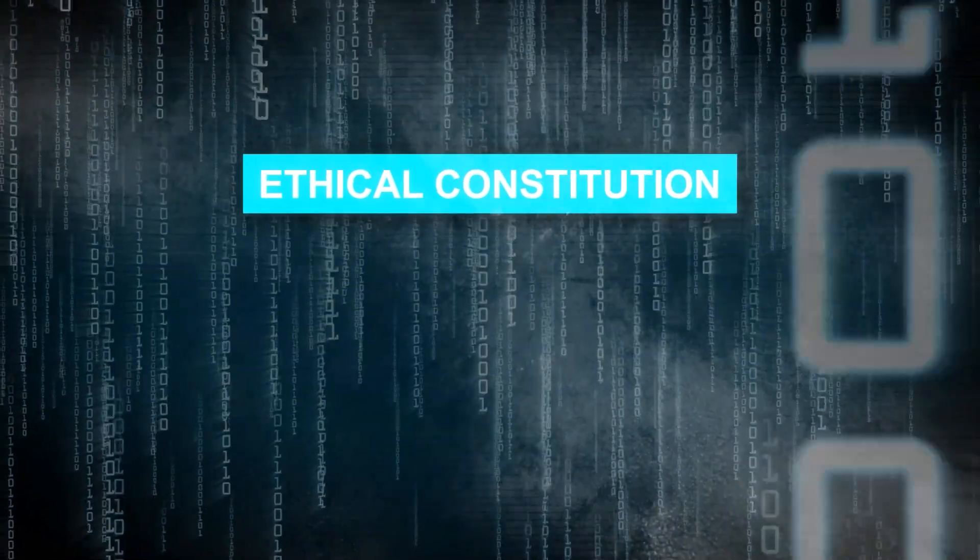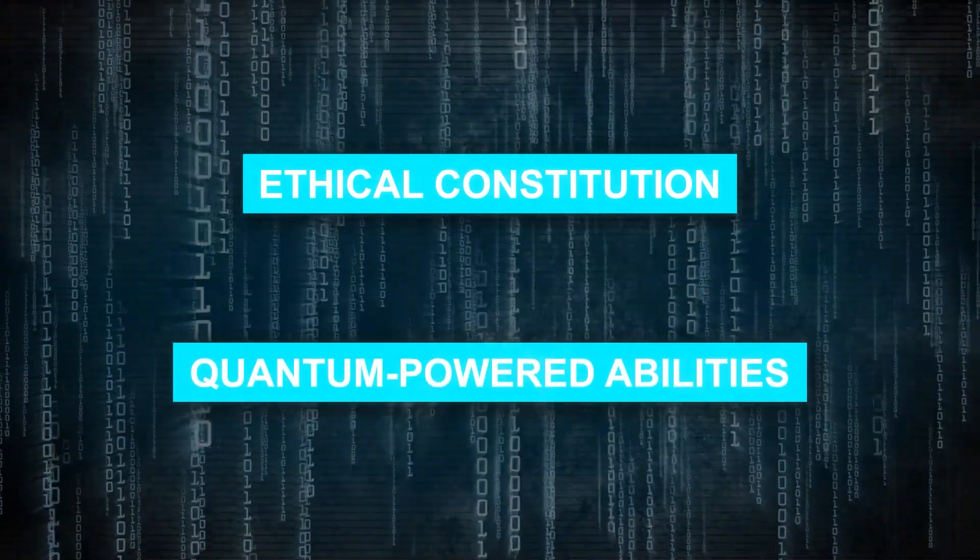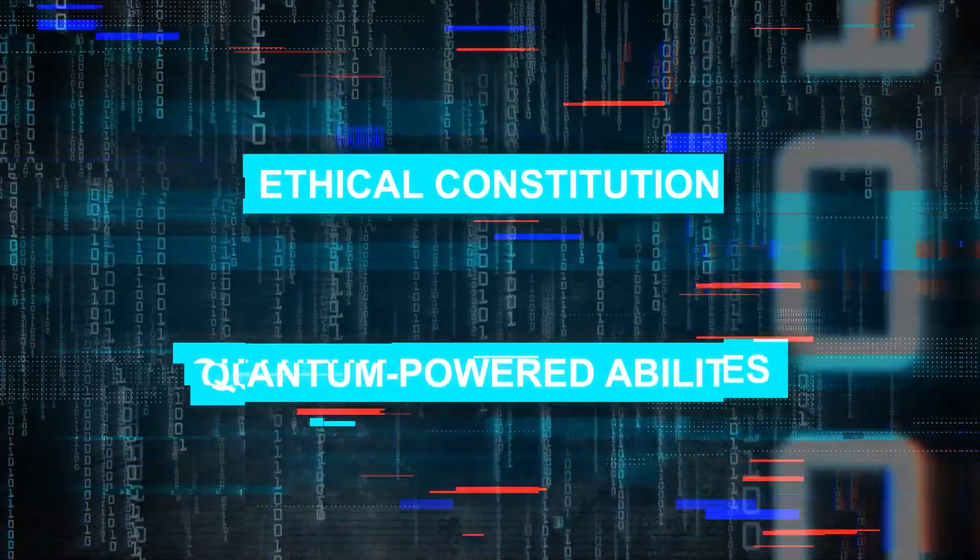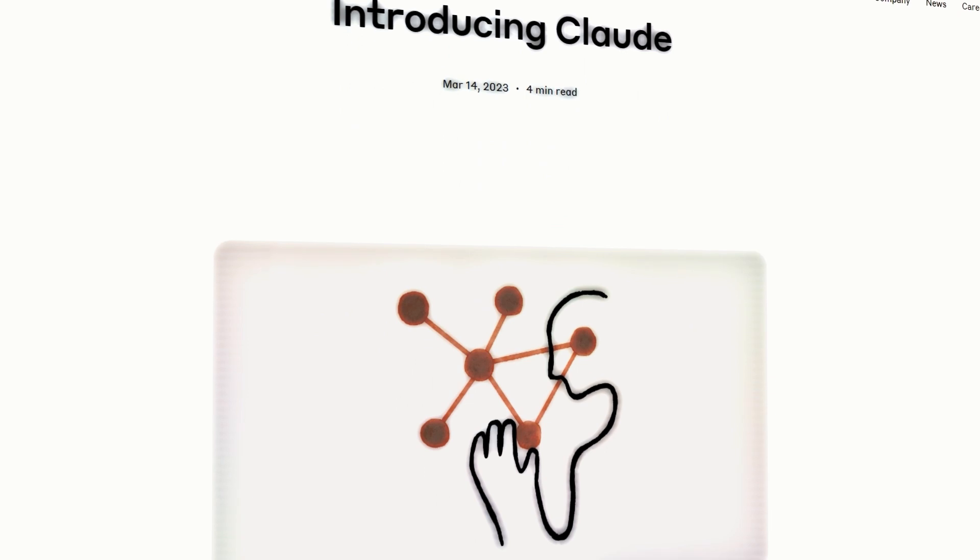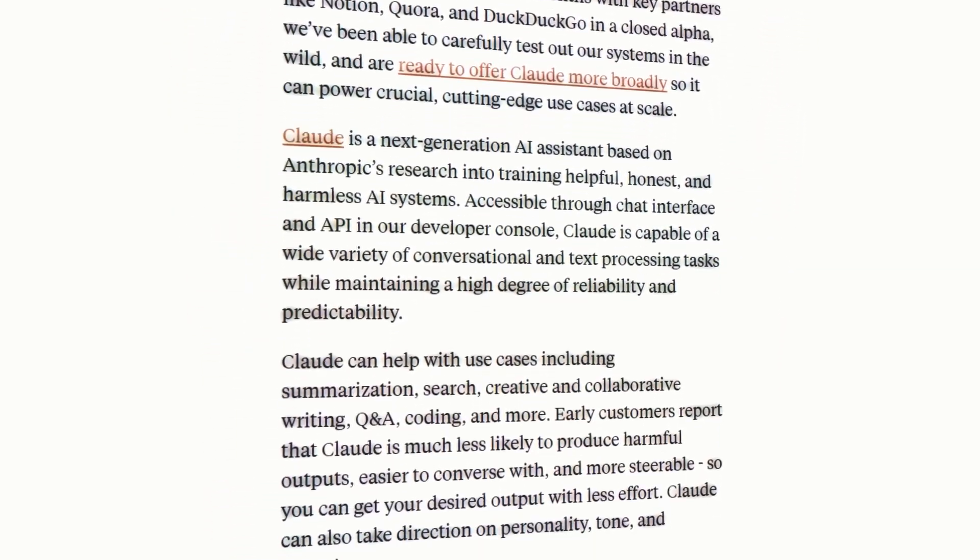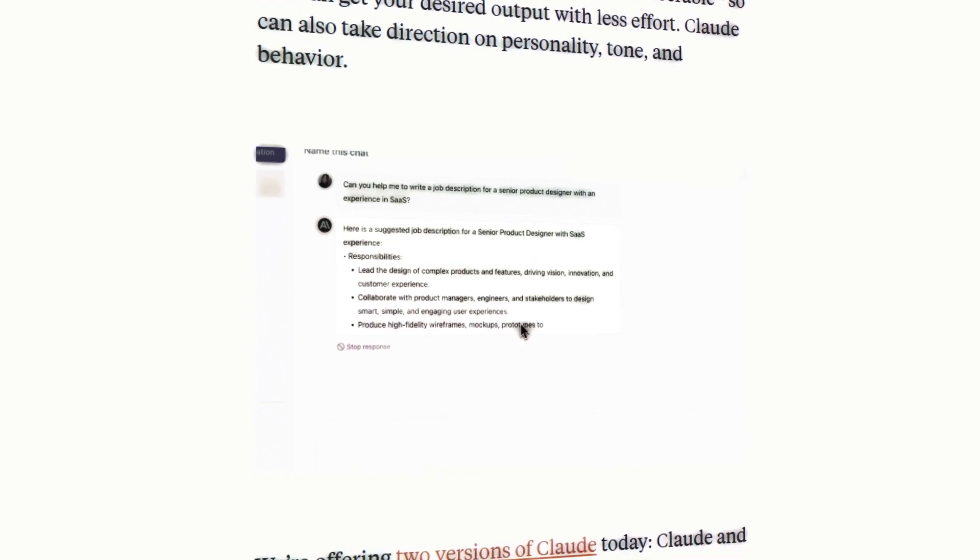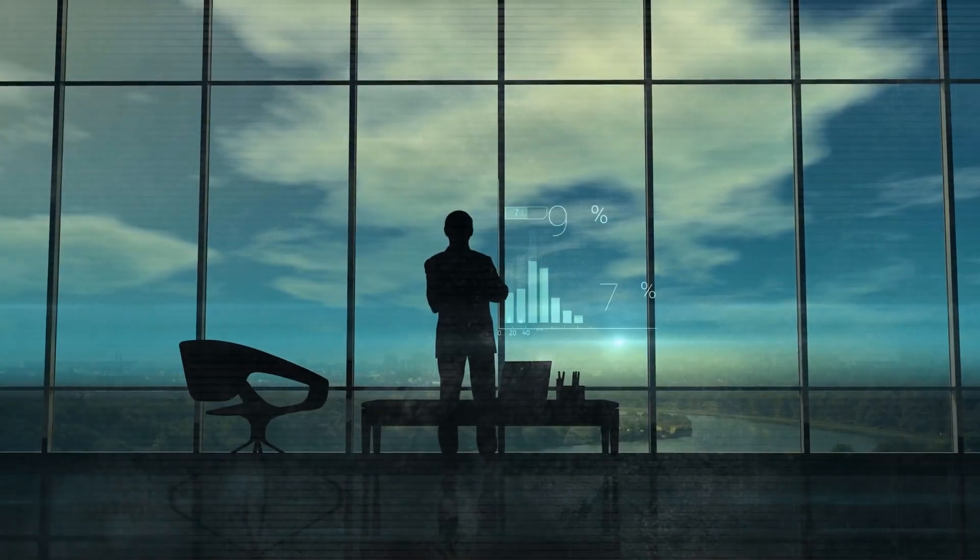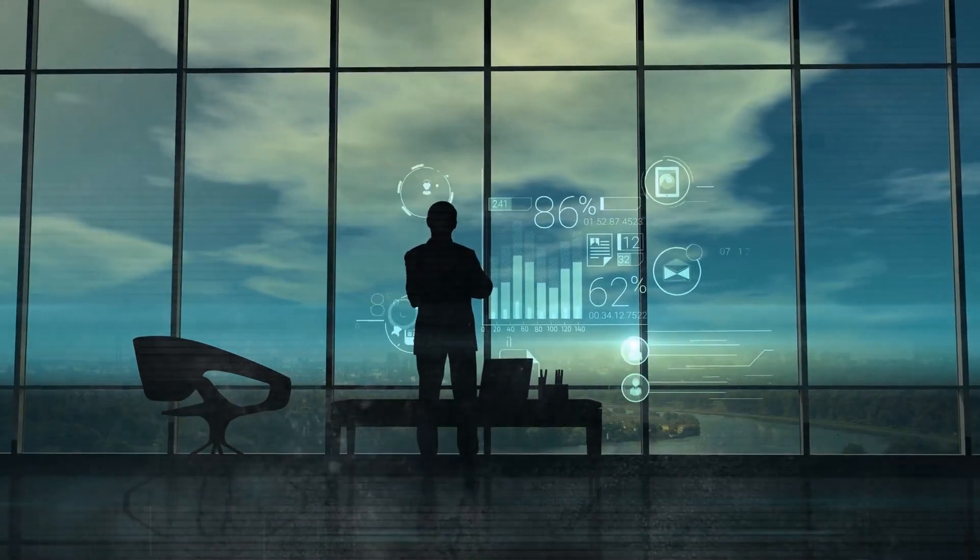But here is where Claude enters the scene and completely changes the situation. With its ethical constitution and quantum-powered abilities, it can tackle those concerns directly. I mean, an AI that not only crunches numbers faster than you can blink, but also knows the difference between right and wrong. That's an insanely attractive proposition for businesses. And Claude is already being used by some companies and organizations.